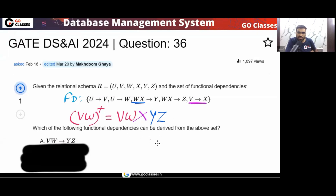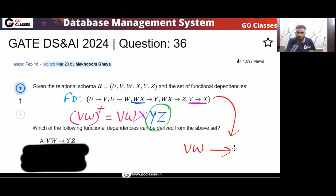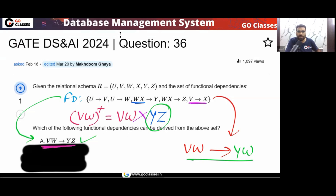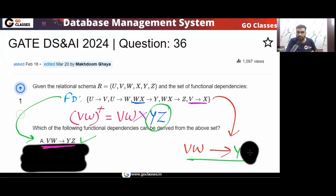Because we have seen that in this FD set, VW determines YZ. We got it — VW determines YZ. So I can say that from this FD set, you can derive this FD. Option A is definitely correct. The complete closure of VW is VWXYZ — nothing else. So VW can determine YZ.